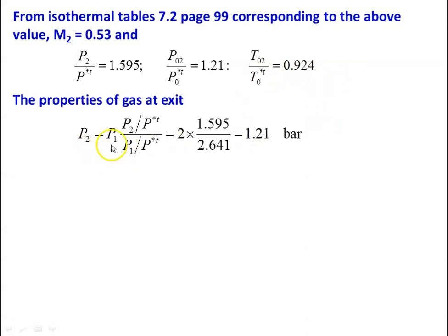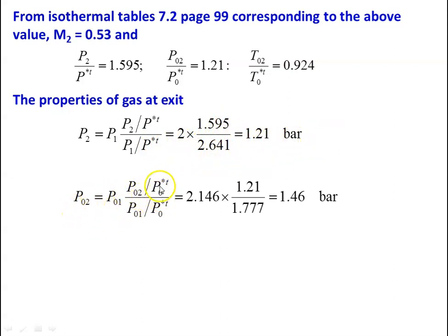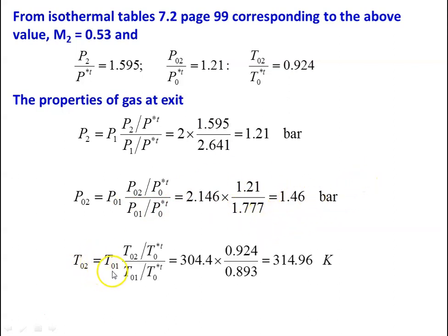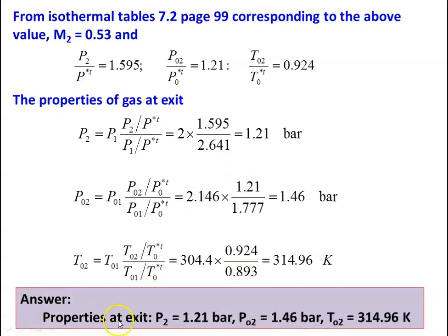Properties at exit: P2 = P1 × (P2/P*T)/(P1/P*T) = 2 × 1.595/2.641 = 1.21 bar. PO2 = PO1 × (PO2/PO*T)/(PO1/PO*T) = 2.146 × 1.21/1.777 = 1.46 bar. TO2 = TO1 × (TO2/TO*T)/(TO1/TO*T) = 314.96 K. Answer: P2 = 1.21 bar, PO2 = 1.46 bar, TO2 = 314.96 Kelvin.